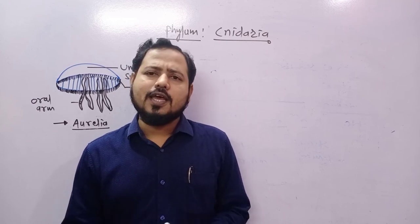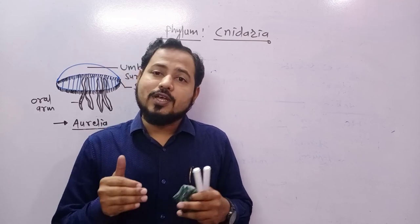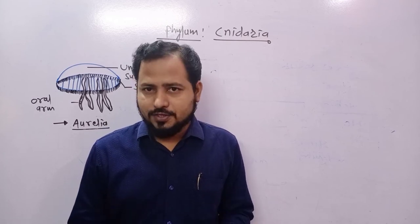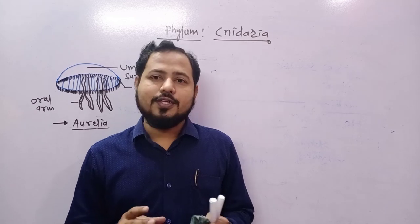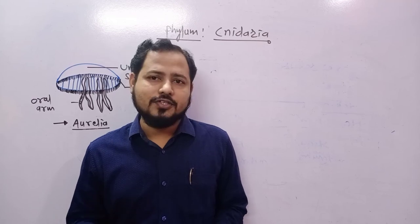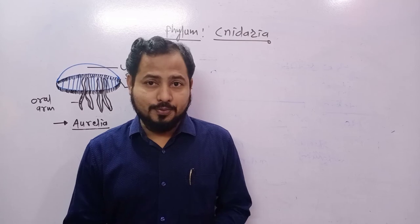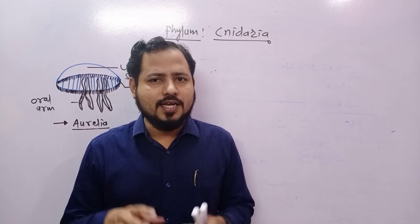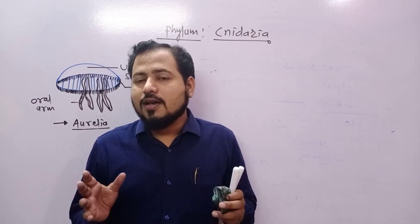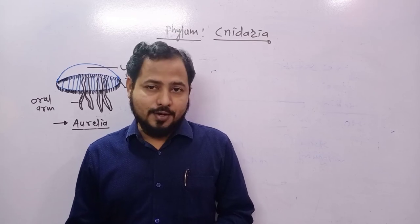There is a gastrovascular cavity, previously called the coelenteron cavity, associated with circulation, absorption, and digestion. These animals are mostly sedentary, may be colonial at times, and may also be free-swimming. They show larval stages, so their development is indirect.